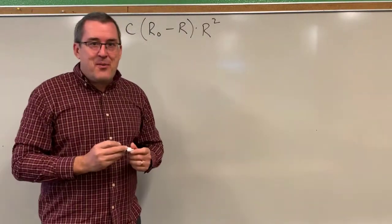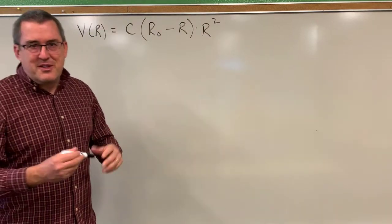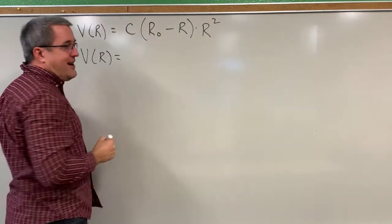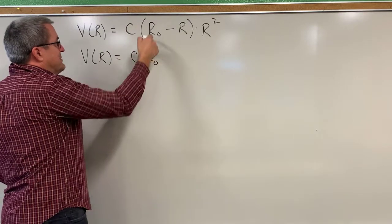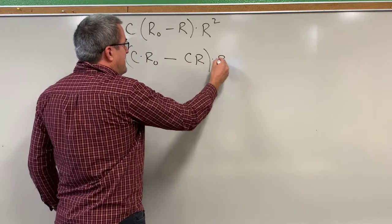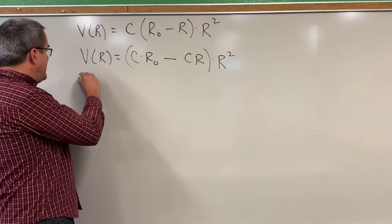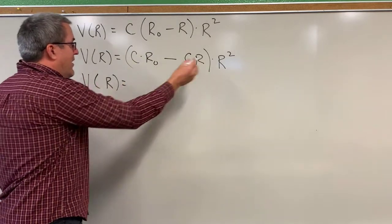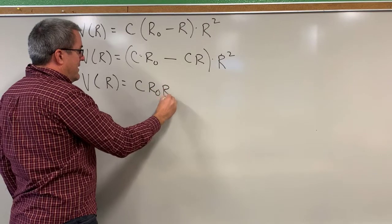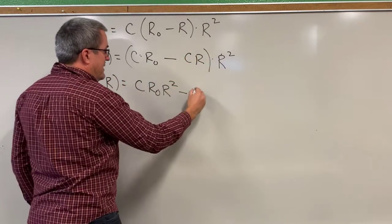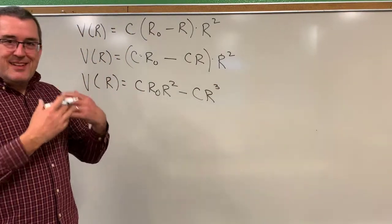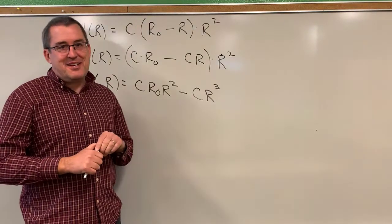Here is the model that we are using. To begin, we're going to do a little algebra just to rewrite this model. First, let's distribute that constant C. So C gets multiplied by R sub zero, C gets multiplied by R, and then that quantity gets multiplied by R squared. Let's do one more distribution — distribute that R squared. R squared gets multiplied by CR sub zero, minus R squared gets multiplied by CR to produce CR cubed. This will allow us to take derivatives and find this maximum velocity a bit more easily.